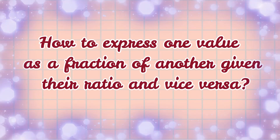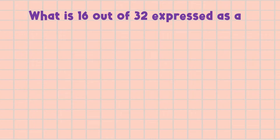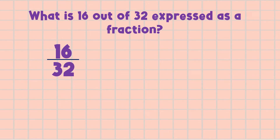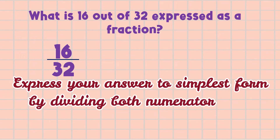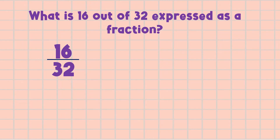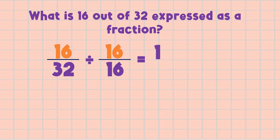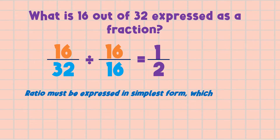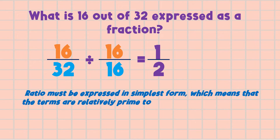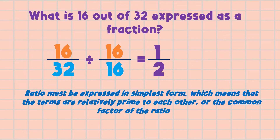How do we express one value as a fraction of another given the ratio, and vice versa? Let's consider the following examples. First example: What is 16 out of 32 expressed as a fraction? So 16 out of 32 is equal to 16 is to 32. Don't forget to express your answer in simplest form by dividing both numerator and denominator by the GCF. The GCF of 16 and 32 is 16. So 16 divided by 16 equals 1, and 32 divided by 16 equals 2. Therefore, the ratio is 1 is to 2. Ratio must be expressed in simplest form, meaning the terms are relatively prime or their common factor is 1.